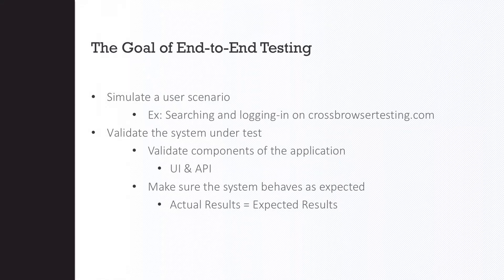So what is the goal of end-to-end testing? It's to simulate a user experience, just as we discussed. You want to make sure that you're going through the motions of what your user is actually going to experience. A simple example is searching for and logging on to crossbrowsertesting.com — actually searching for it, clicking the login button, entering your credentials such as your username and password, clicking submit, and then having the application launch. You want to make sure you're thinking about all the different steps the user has to go through.